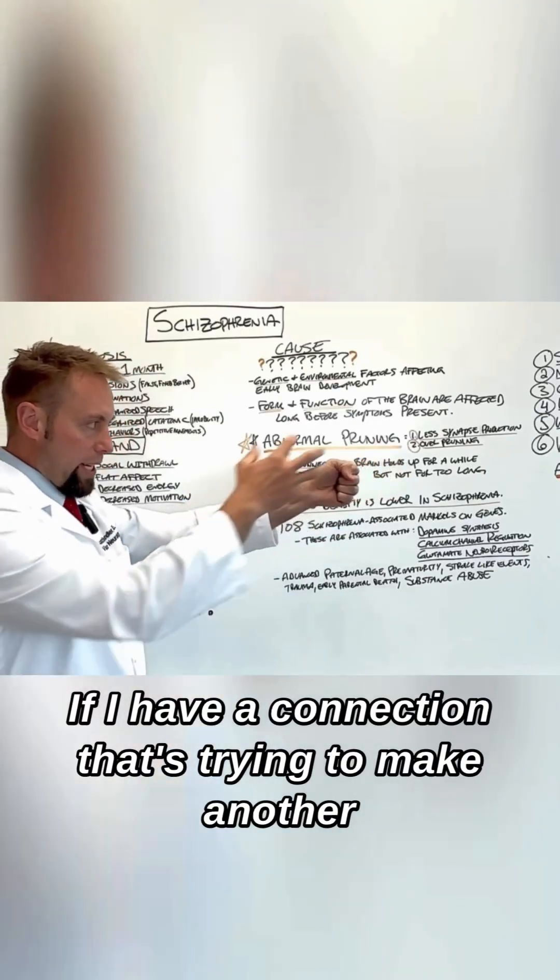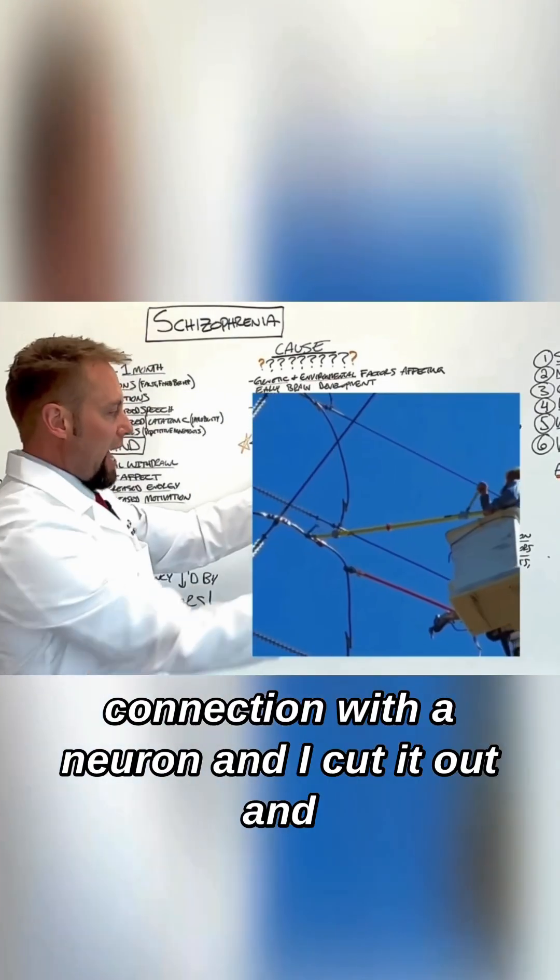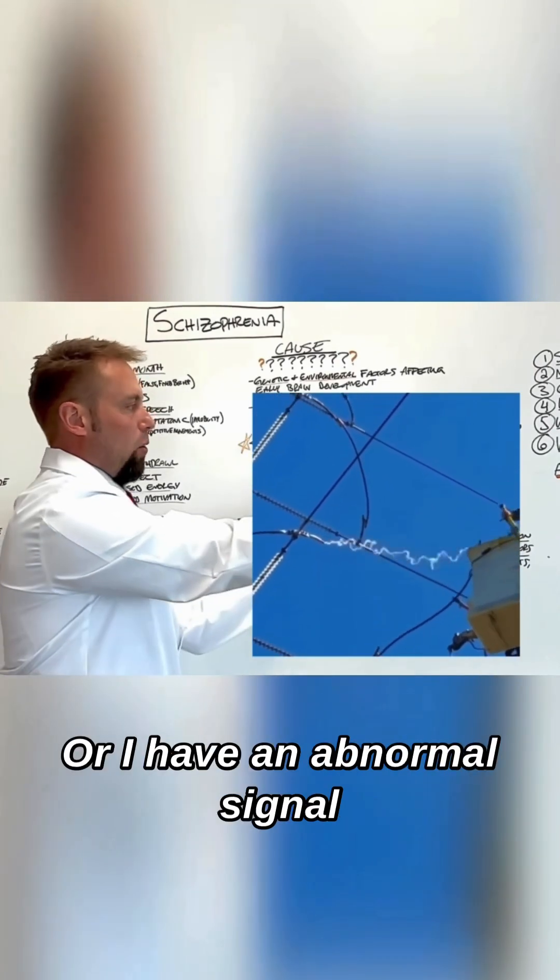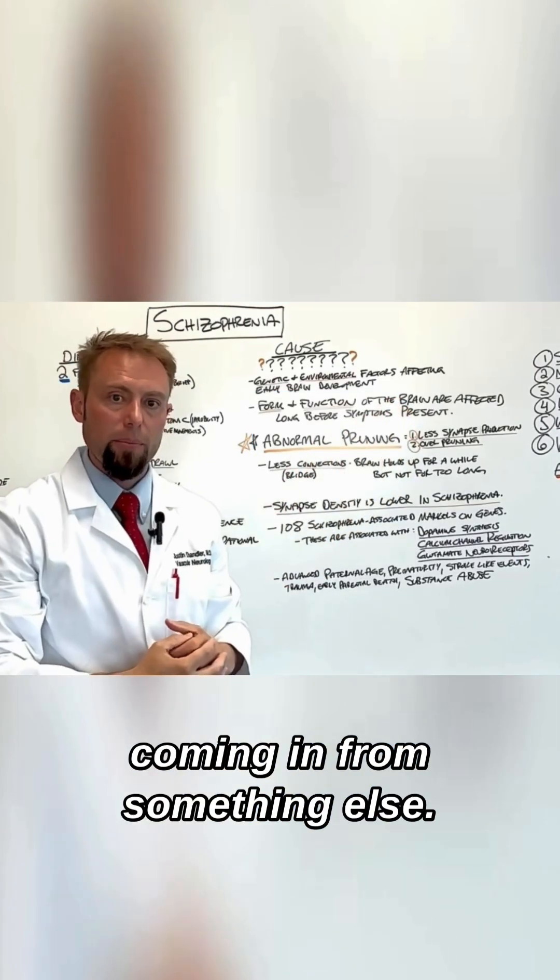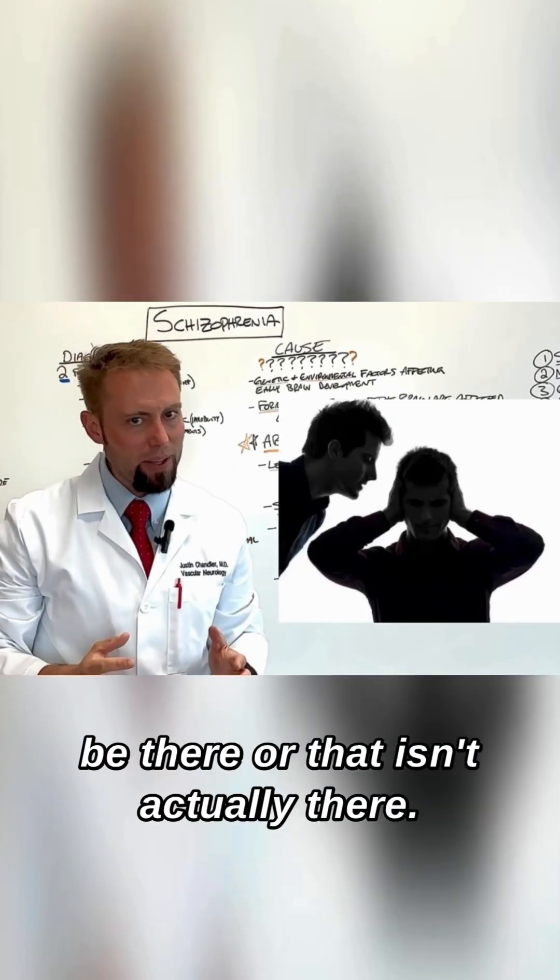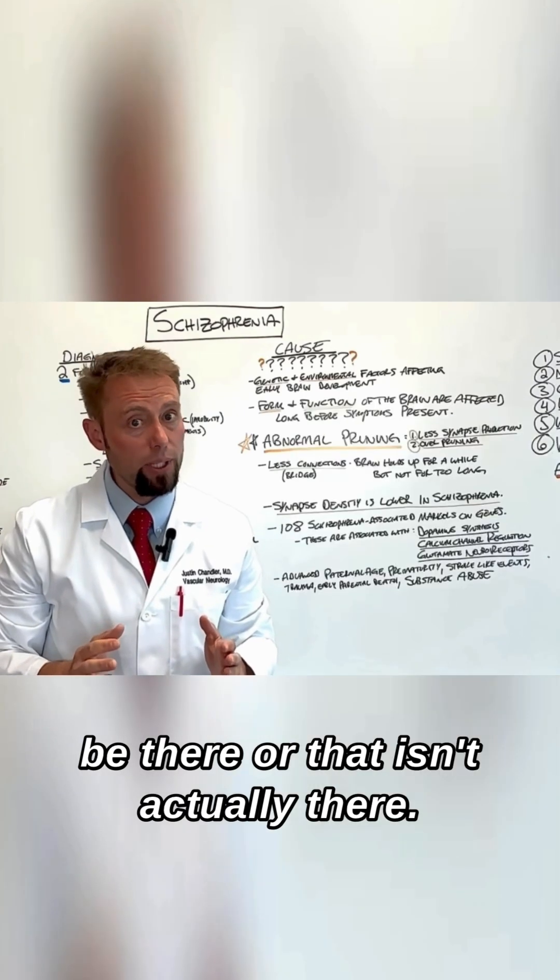If I have a connection that's trying to make another connection with a neuron and I cut it out and prune it, I'm left wanting that connection or I have an abnormal signal coming in from something else. Maybe I'm hearing a voice that shouldn't be there or that isn't actually there.